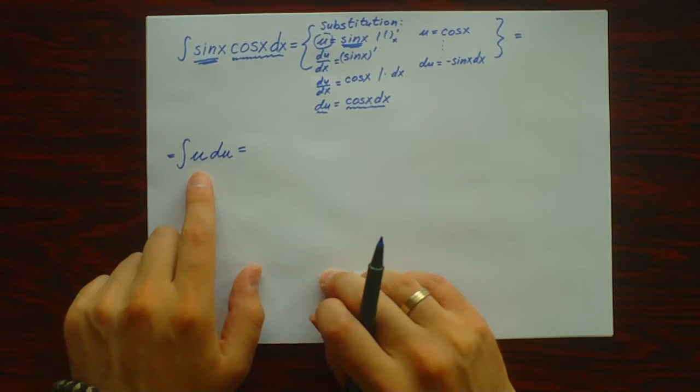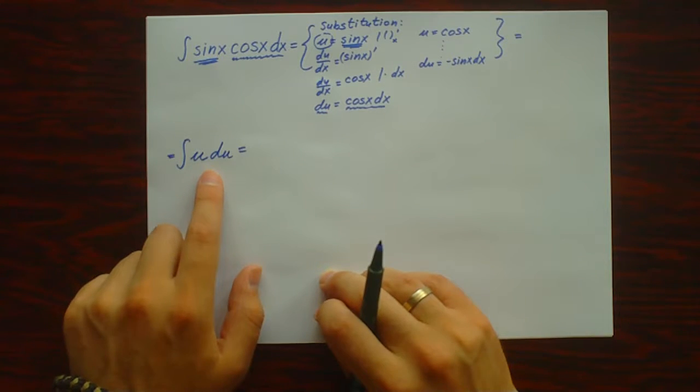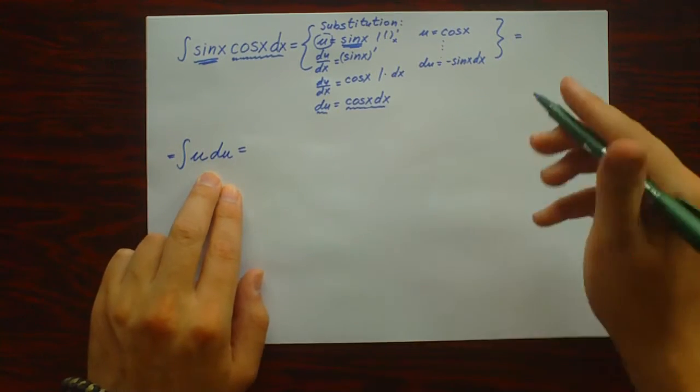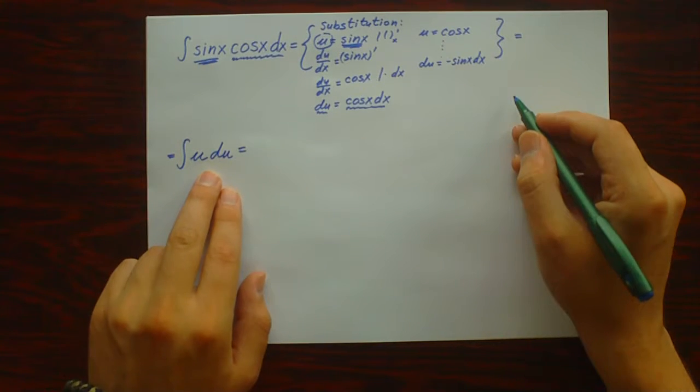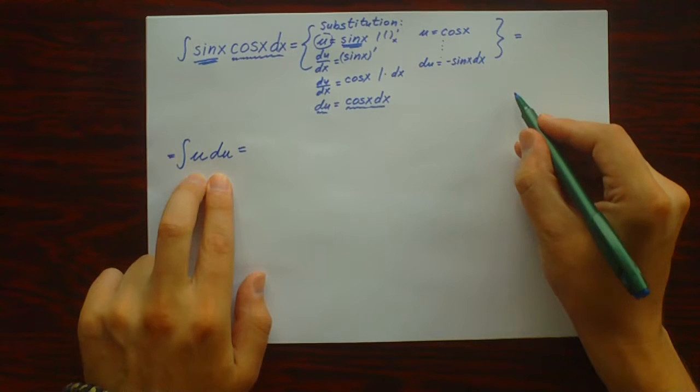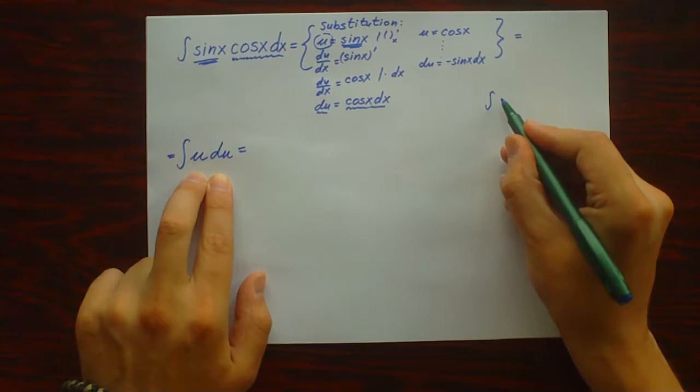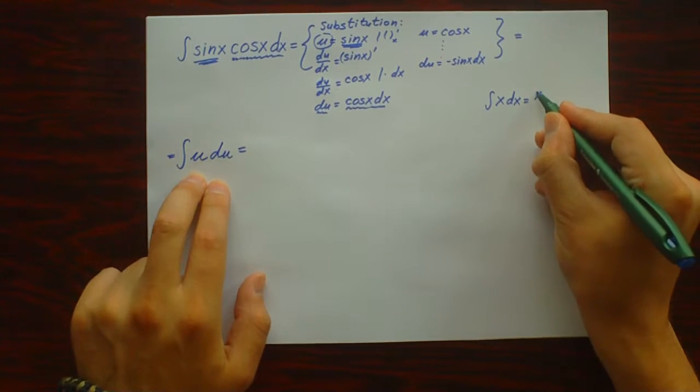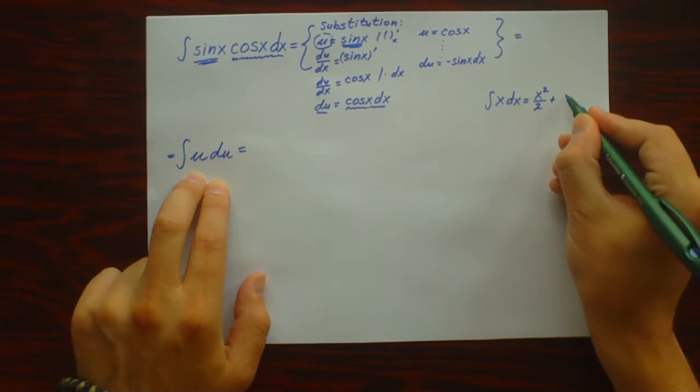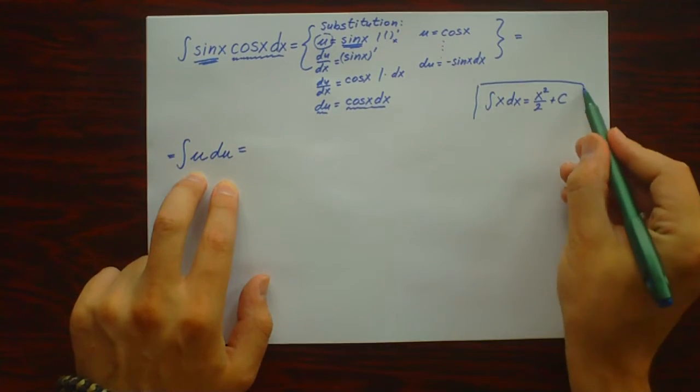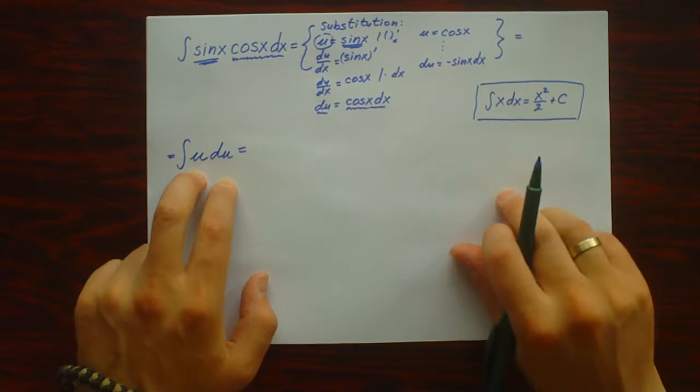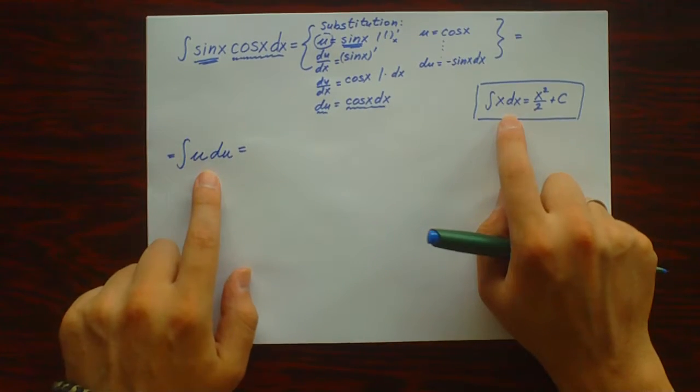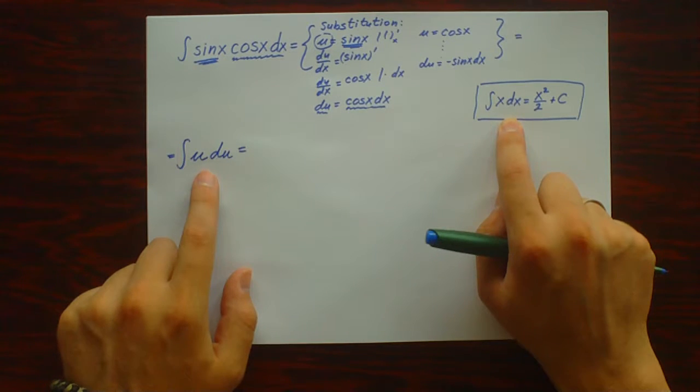Next, what we're going to do is see if we have a formula for calculating this integral. We have the formula: the integral of x dx equals x squared over 2 plus C. So we're going to use this formula. Please remember this formula; it's very often used in these kinds of problems.